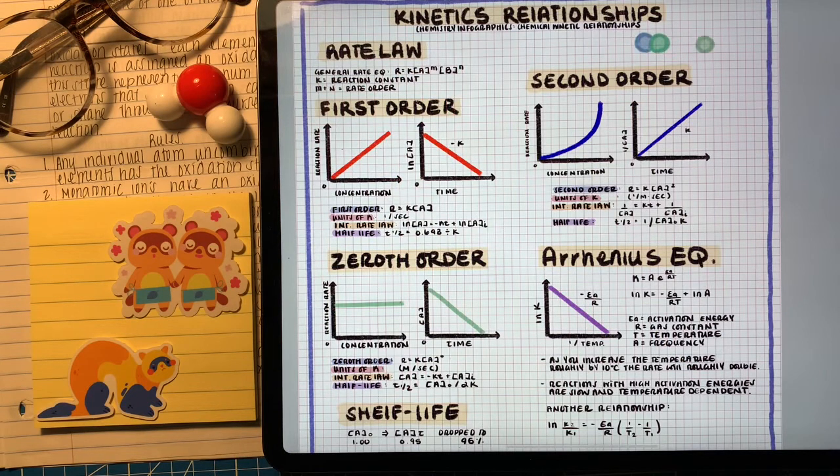If we understand the theory of integrated rate law understanding half-life and shelf life is kind of easy. Half-life being the time it takes for the concentration of the reactants to be cut in half and they have simpler versions of the equations tweaked to make calculating half-life a little easier. Shelf life being the time it takes for the concentration to drop five percent.